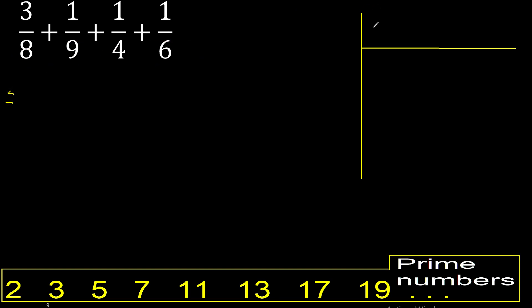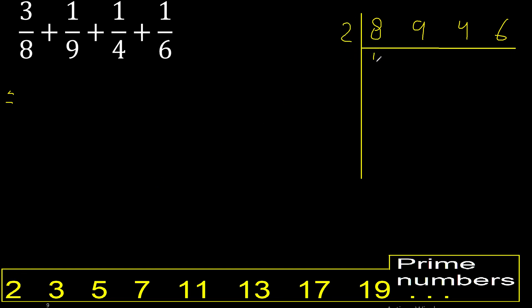First, this number here can be divided by 2, yes. Therefore, divided by 2: divided by 2 is 4. Cannot be divided by 2, therefore the same number divided by 2, divided by 2.